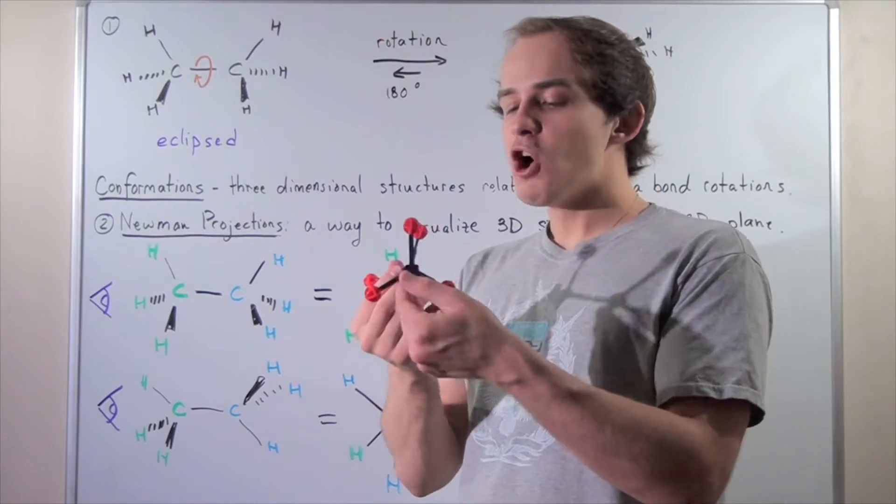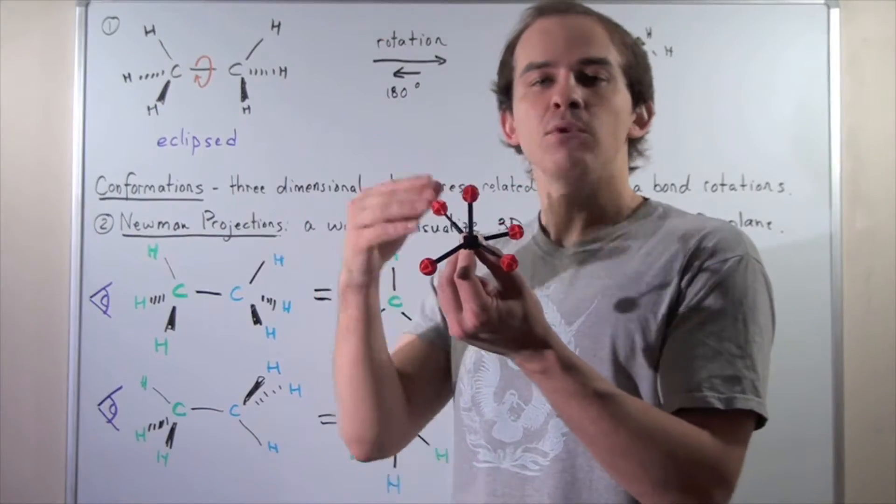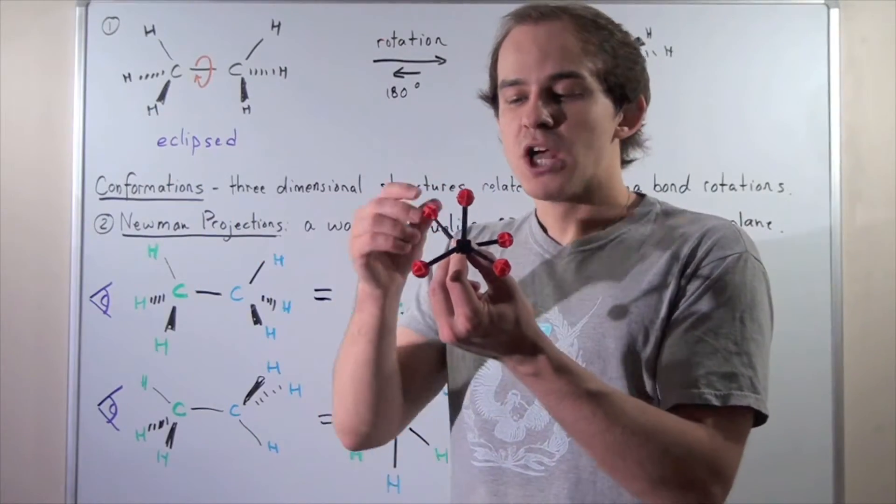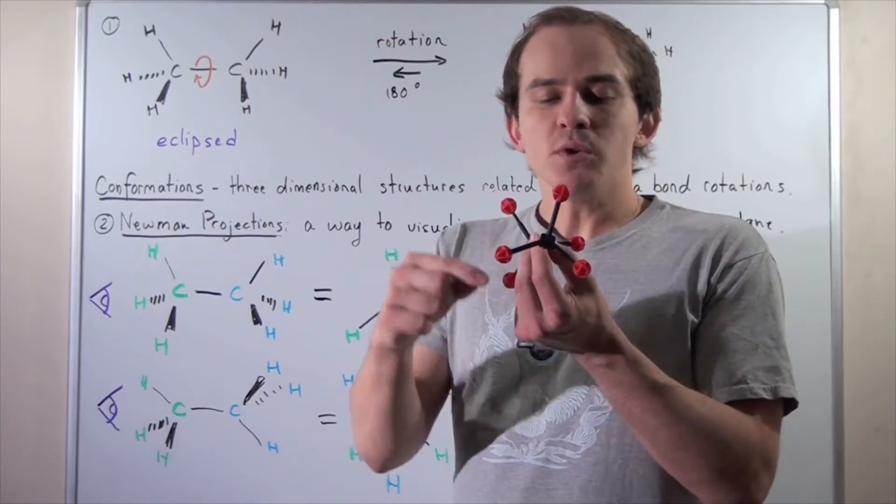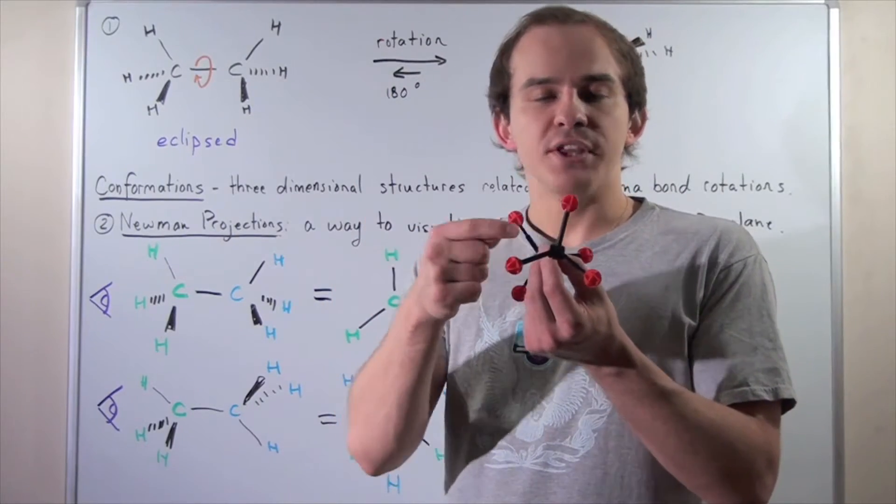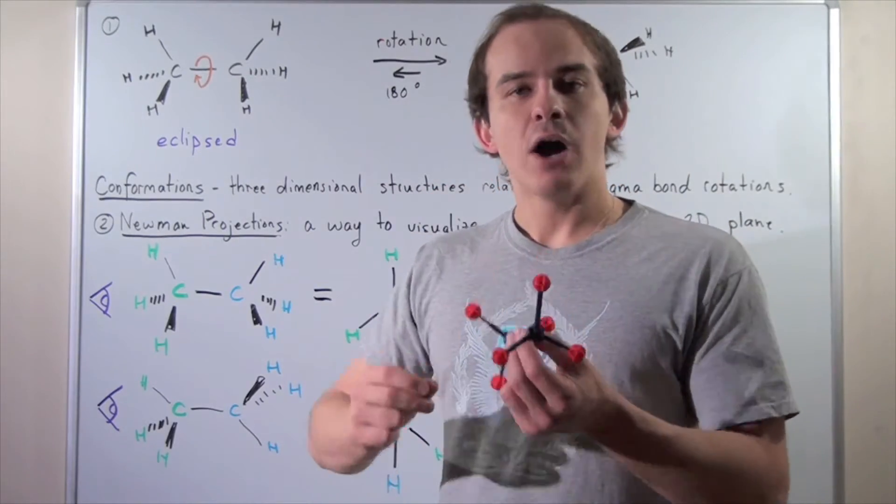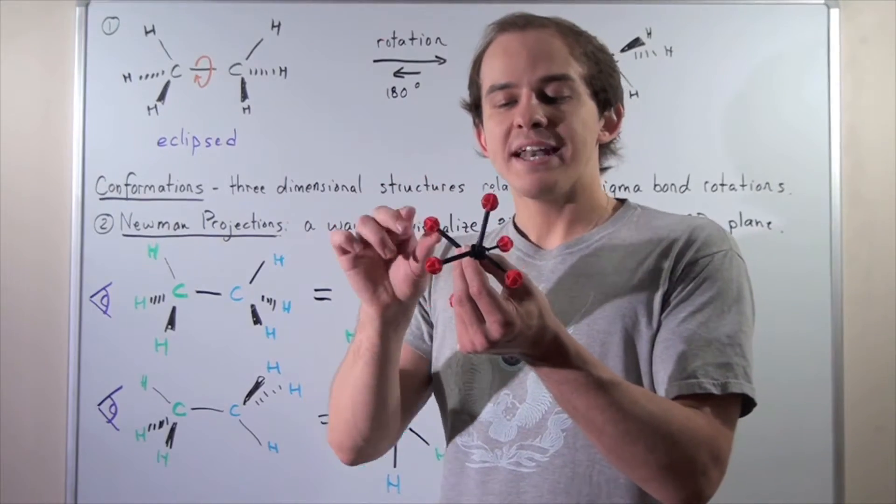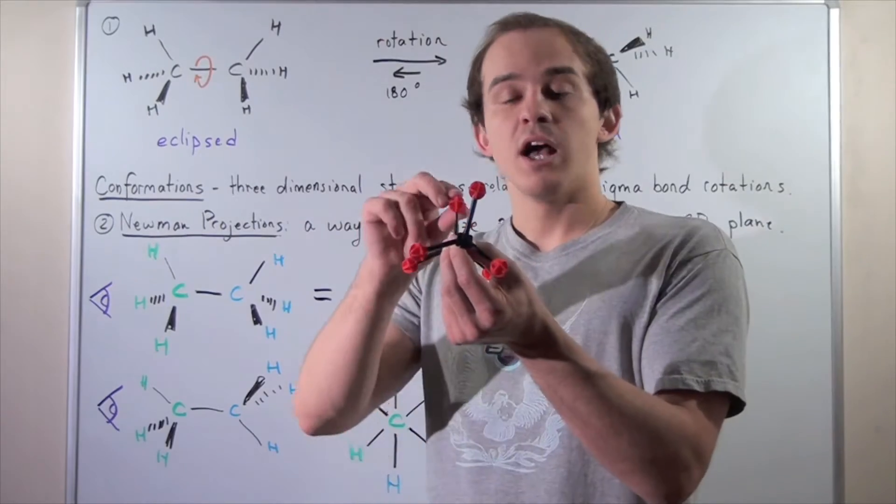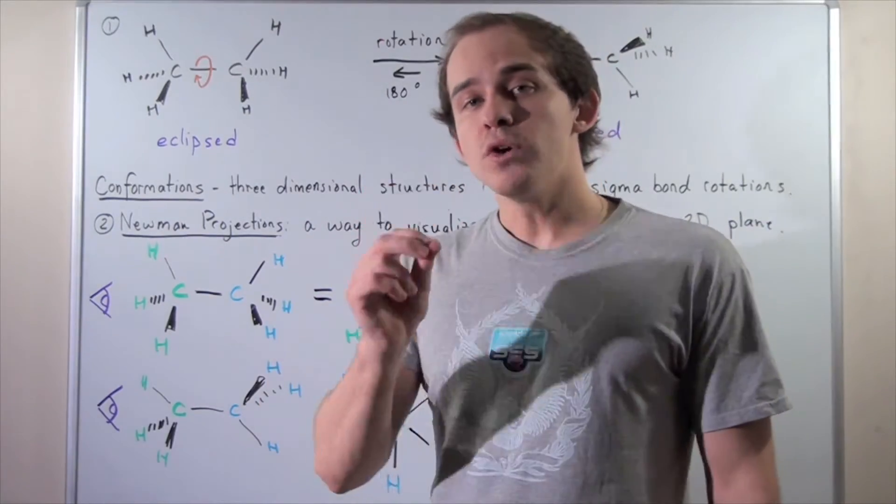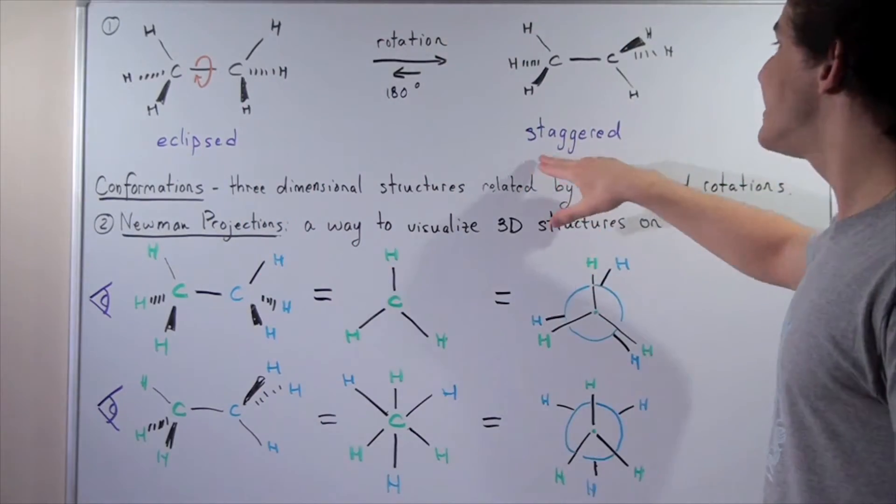For example, here I have one conformation. If I rotate this bond some given amount of degrees, I will have a second type of conformation. These two molecules are related to one another by the fact that they're rotated some amount of degrees about this carbon-carbon bond. These guys are also known as conformers. There are many different types of conformers that exist. Two important conformers that you should know are the eclipsed conformer and the staggered conformer.